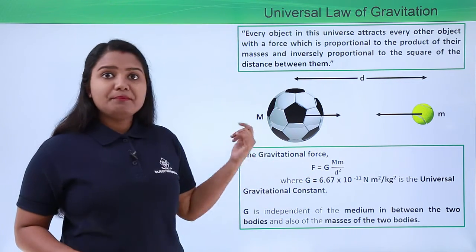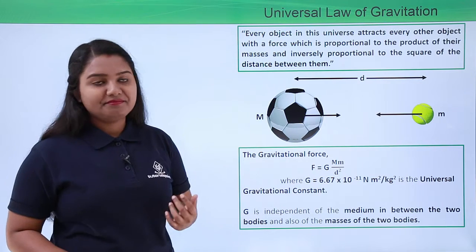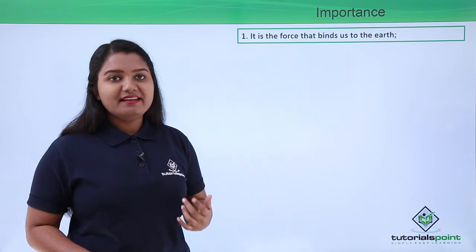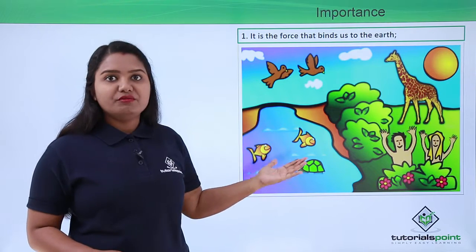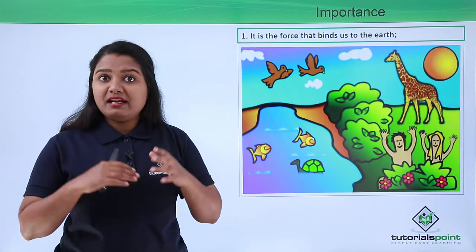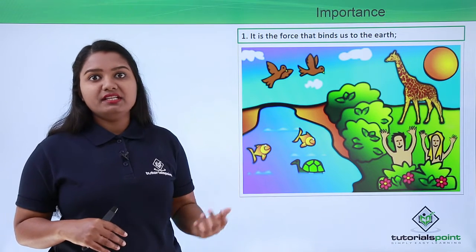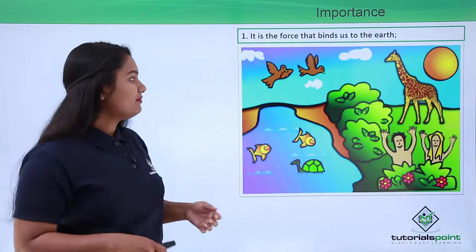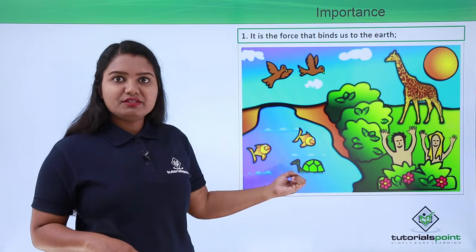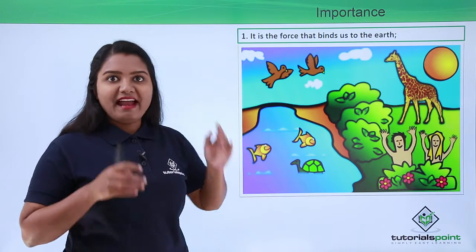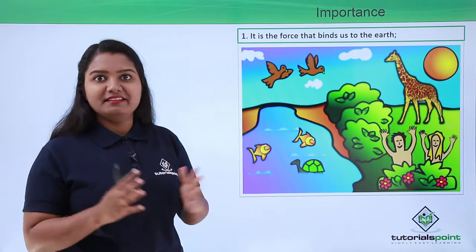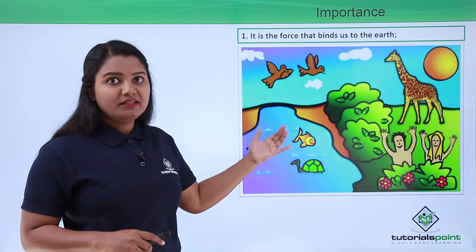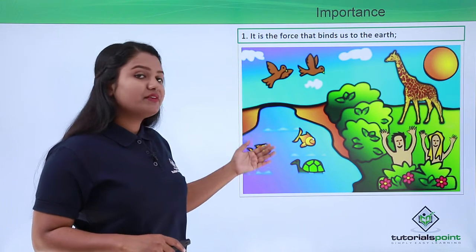Now we will look at some importance of this gravitational law. The first thing that the force of gravity does is keep us bound to the surface of the earth. We all know this is because of the gravitational force the earth exerts onto all objects around it. If we were to withdraw this gravitational force, we would not land on the earth — we would be floating here and there.